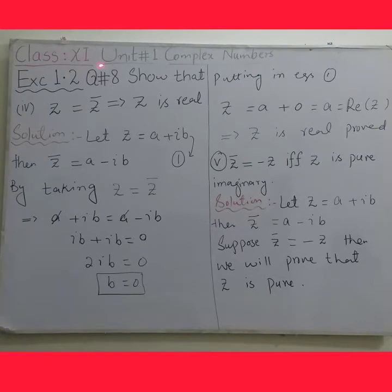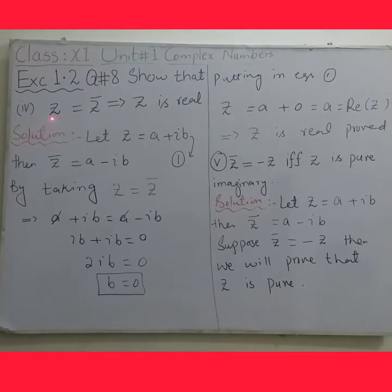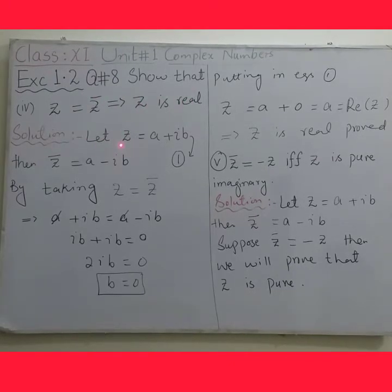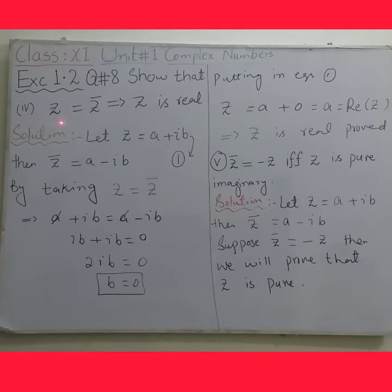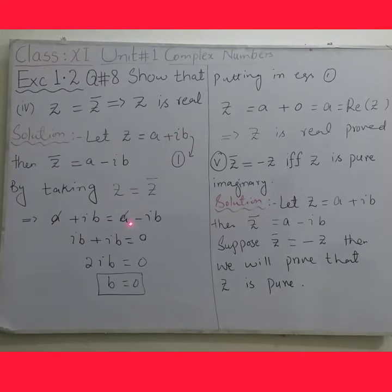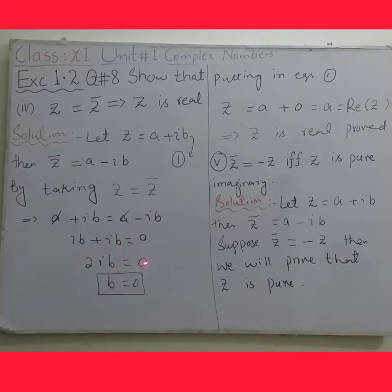Now Part 4 of Question Number 8: z equals z conjugate implies z is real. Let z equal to a plus iota b, then z conjugate equals a minus iota b. By taking z equals z conjugate and putting in the values: a plus iota b equals a minus iota b. A cancels with a, leaving iota b. Bringing iota b to the left hand side: iota b plus iota b equals 0, so 2·iota·b equals 0. Dividing both sides by 2·iota gives b equals 0.